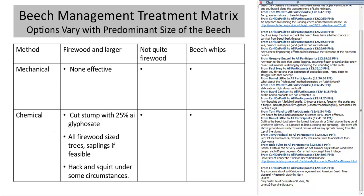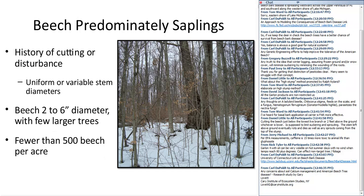The most effective ways to deal with large trees are going to be chemical treatments. Now we'll look at the mid-sized category — forest stands where there is some history of cutting of beech, with trees approximately 2 to 6 inches in diameter. Essentially, think about no merchantable stems or very few, and the key factor is there are going to be fewer than 500 beech trees per acre.